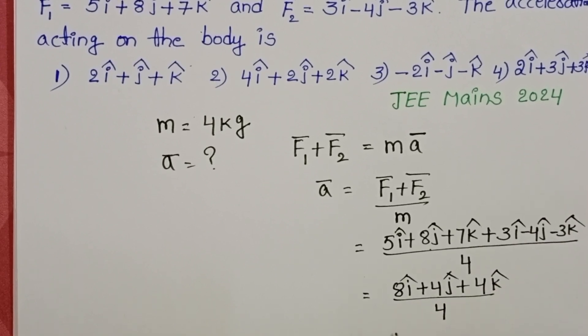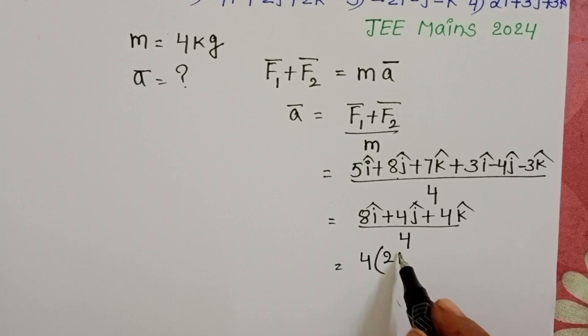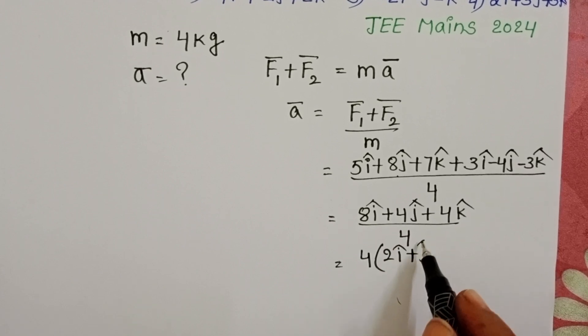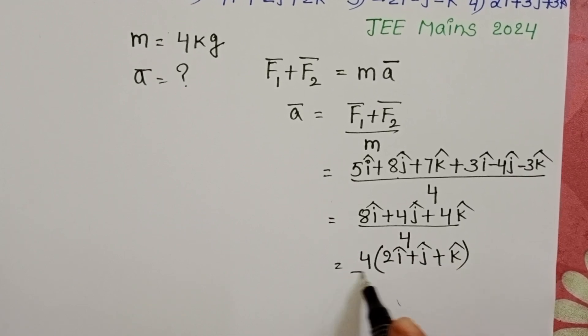Take 4 common, 4 into 2i cap plus j cap plus k cap by 4.